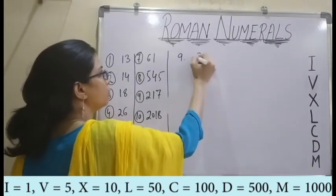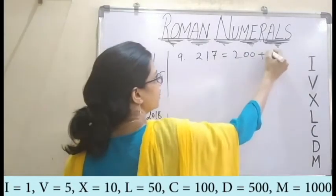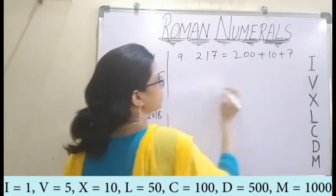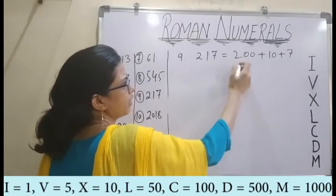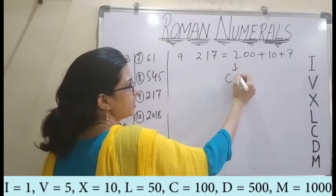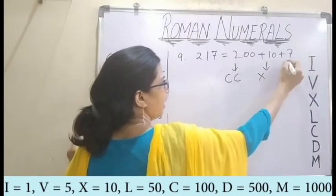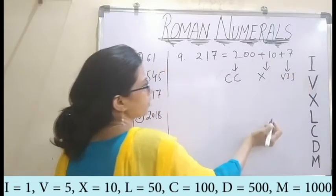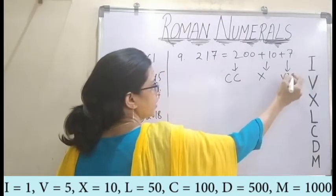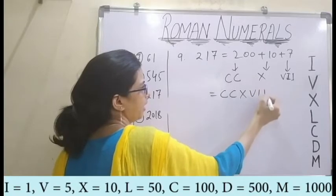The ninth one is 270, which is 200 plus 70 plus 7. For 200, we have double C. For 70, we have X. And for 7, I have VII. So here I get the answer as CCXVII.